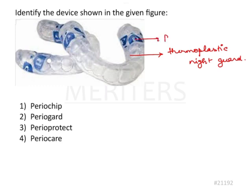It has 'P' written on it, it is transparent, and it is there for both the arches. This is what we can gauge from the image. Now because it looks like a night guard...